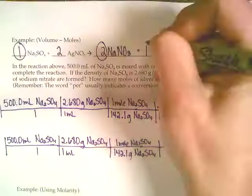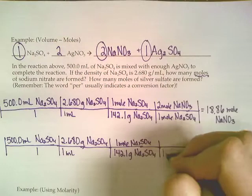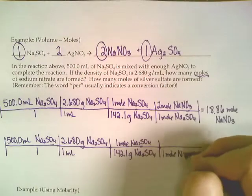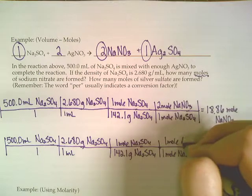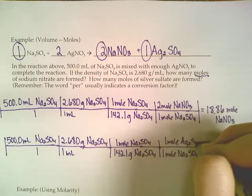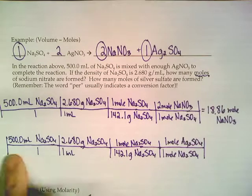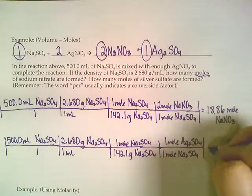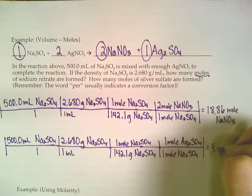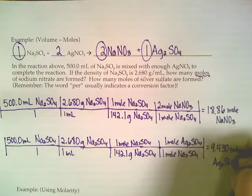This time, it's a one-to-one ratio. And yes, you still need to show it, even if it's a one-to-one. So we'd say one mole of Na2SO4 on the bottom for every one mole of Ag2SO4 on the top. So because the same beginning, and it's just a one-to-one instead of a two-to-one, this is going to be half as big. 9.430 moles of Ag2SO4.